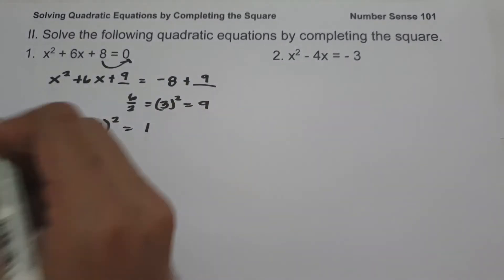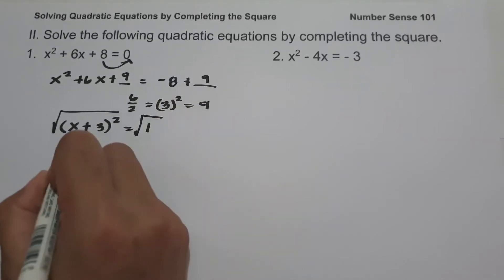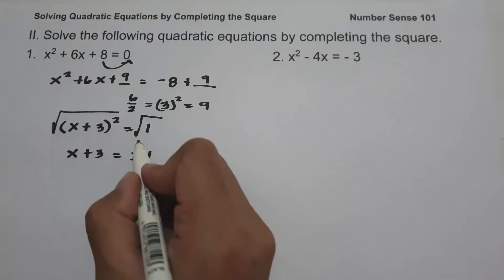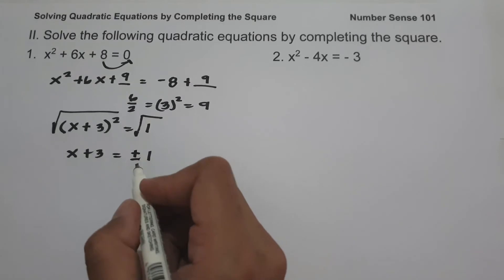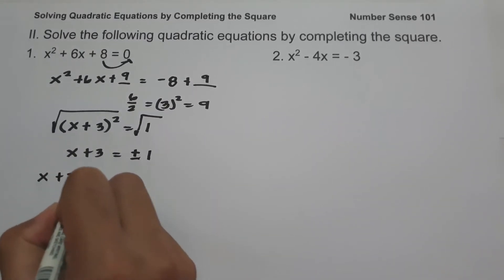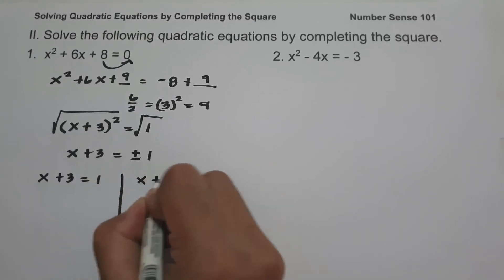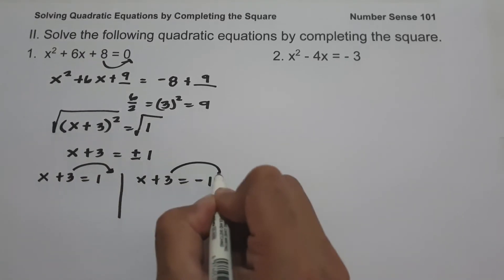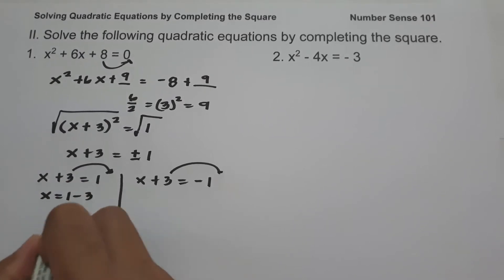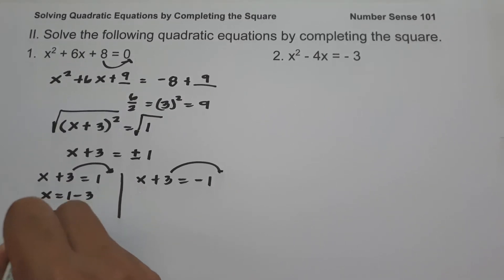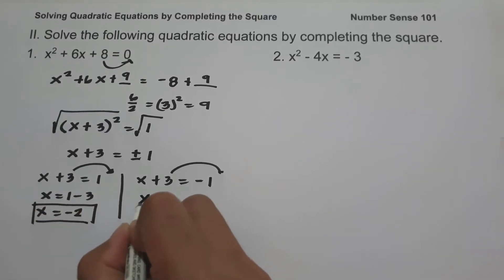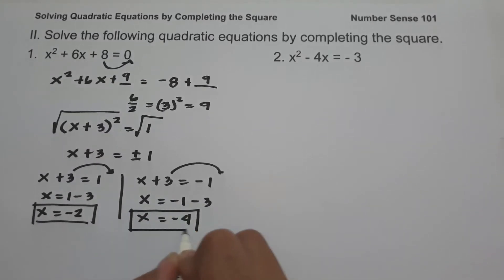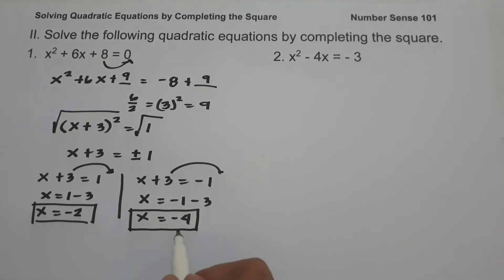To simplify, let us take the square root of both sides. It gives us x plus 3 equals positive and negative 1. We have two equations: x plus 3 equals 1, and x plus 3 equals negative 1. Moving 3 to the other side: x equals 1 minus 3, which is negative 2; and x equals negative 1 minus 3, which is negative 4. Therefore, the values of x are negative 2 and negative 4.